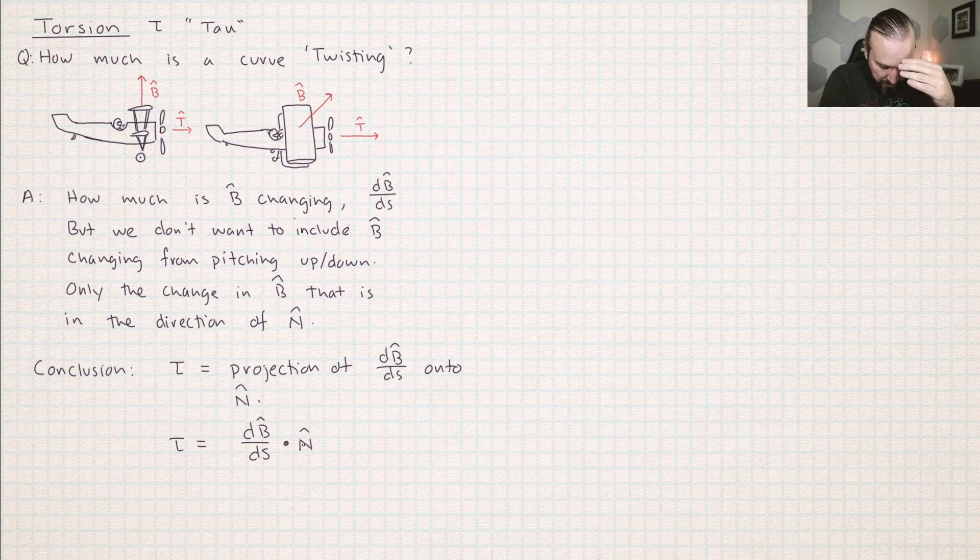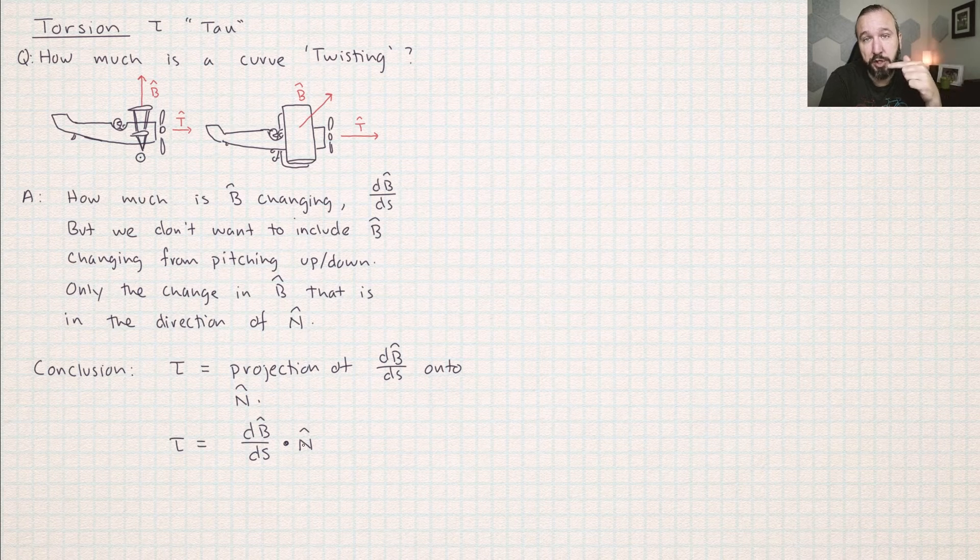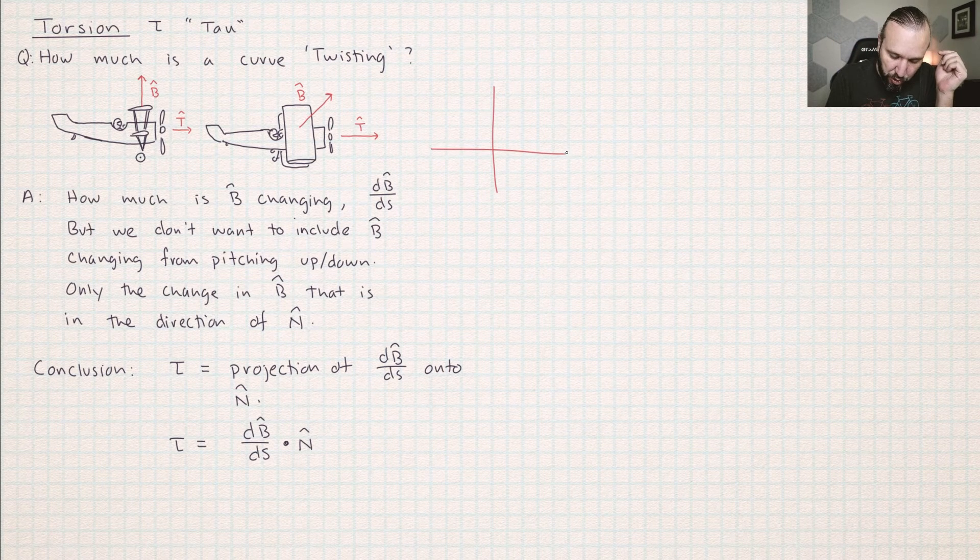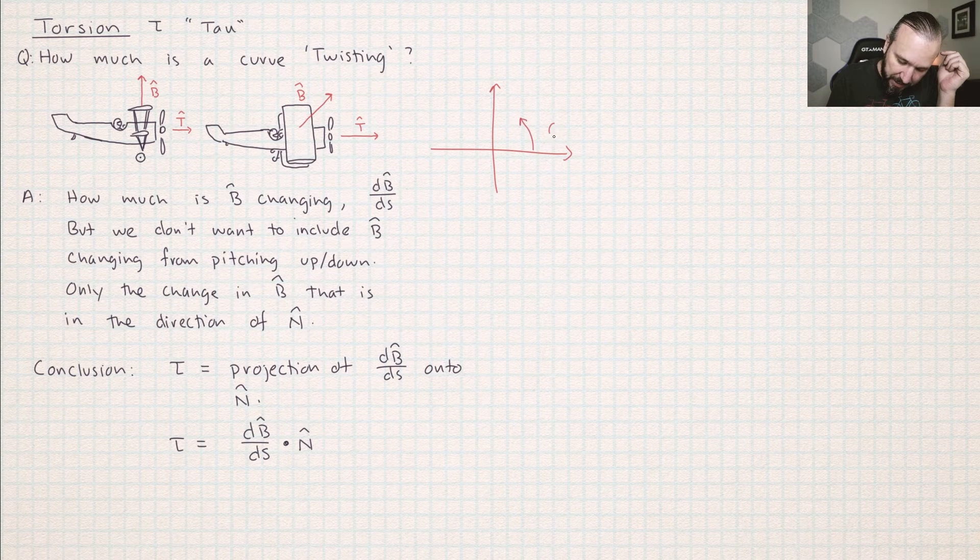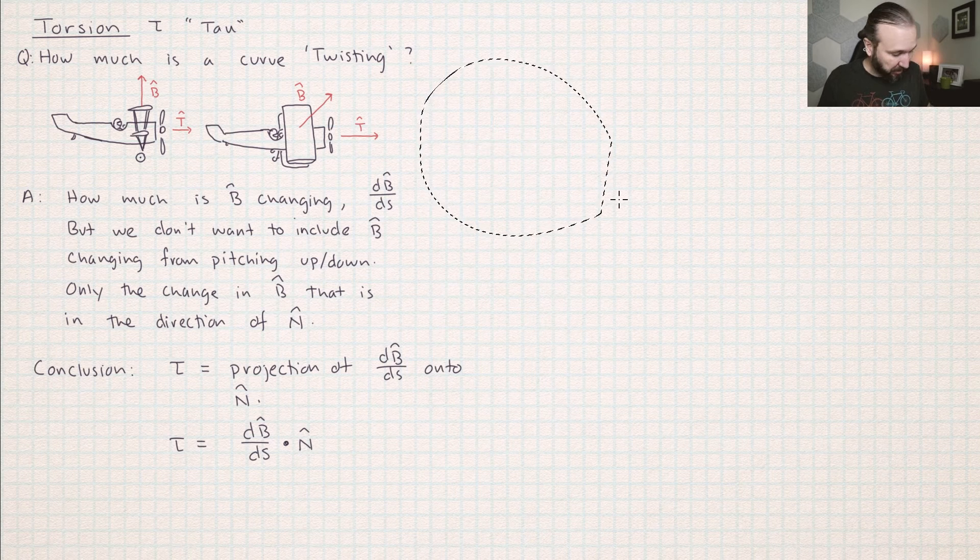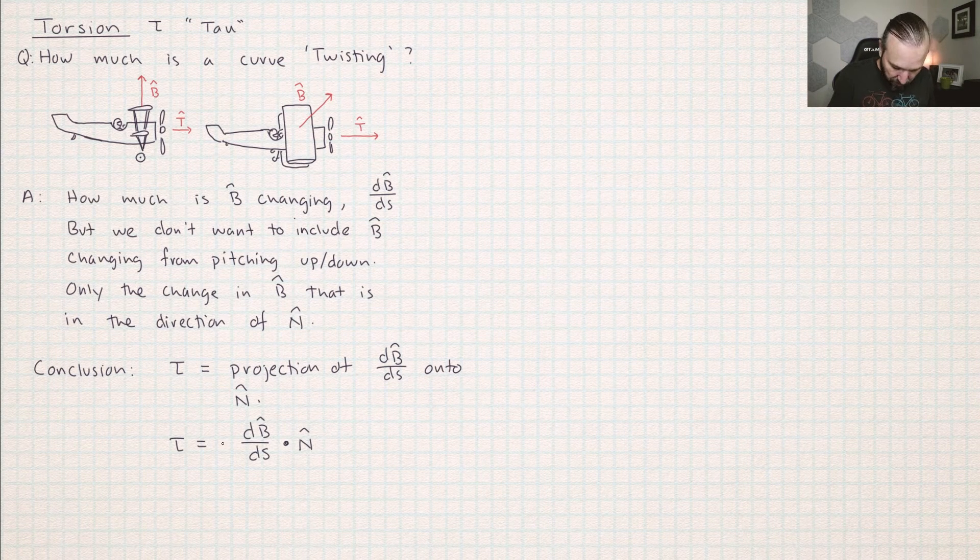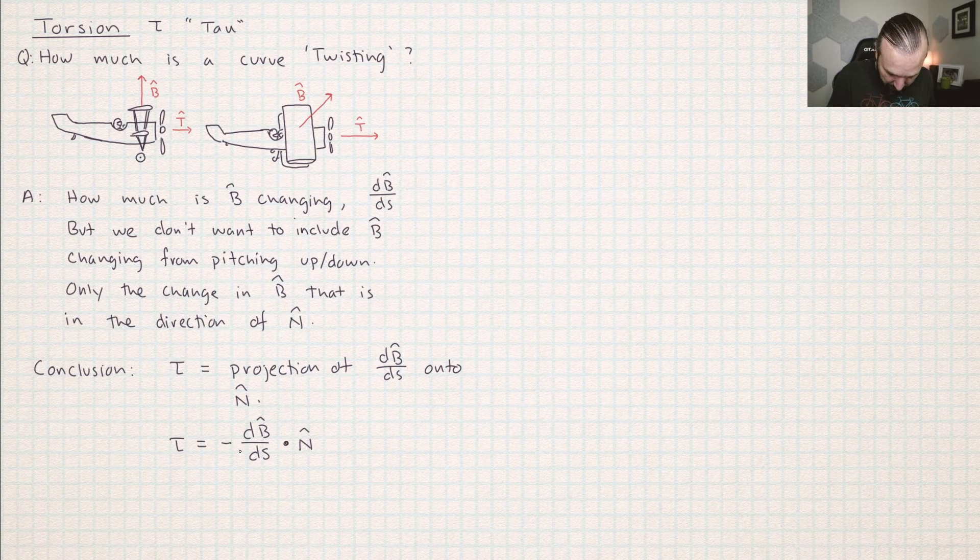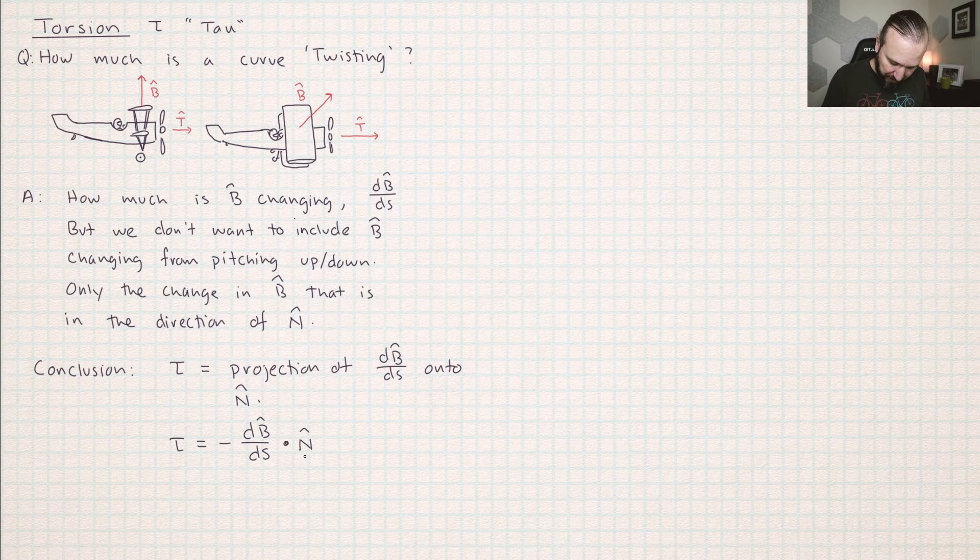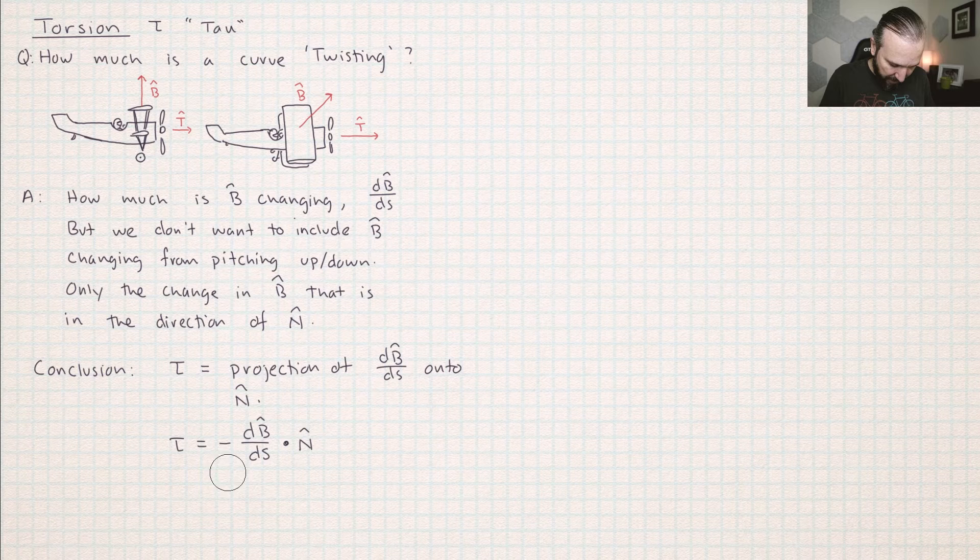So what I need to do is project how much the binormal vector is changing onto the normal vector. And that will isolate the twisting towards how much of it is happening in the left and right way. I've done a lot of silly dancing in this video. I hope that helps. So we're trying to isolate the amount of change in the unit binormal vector that happens in the direction of the normal vector. And so this is a projection. So we calculate projections using dot products. So where we're at right now is you should calculate the rate of change of the unit binormal vector with respect to arc length and then project that onto N.